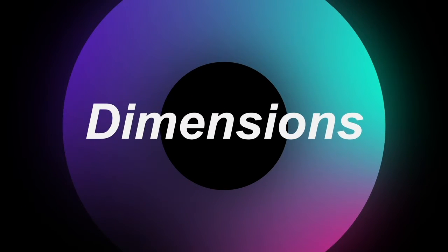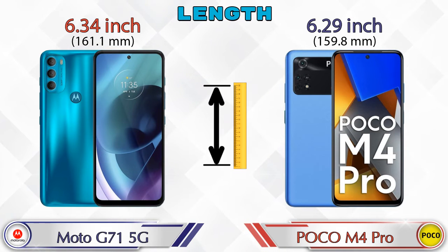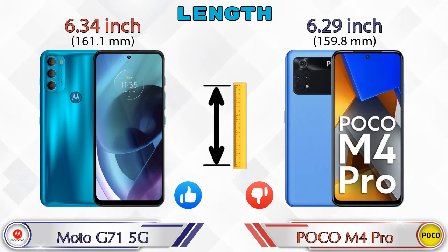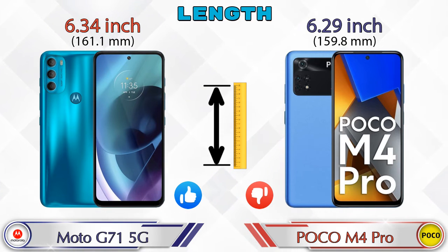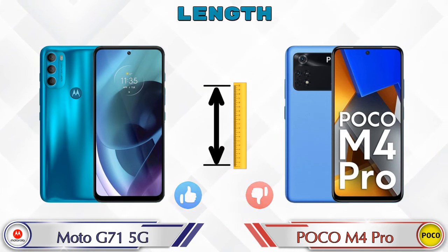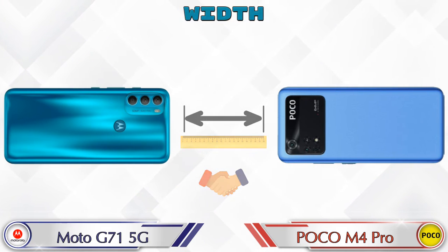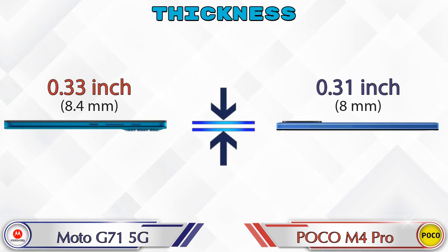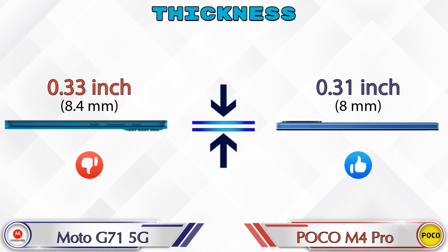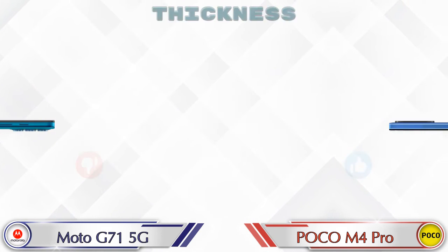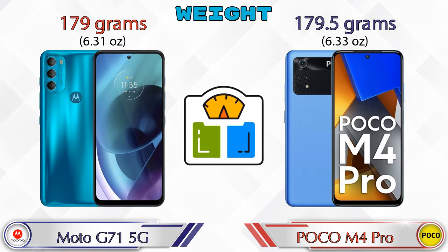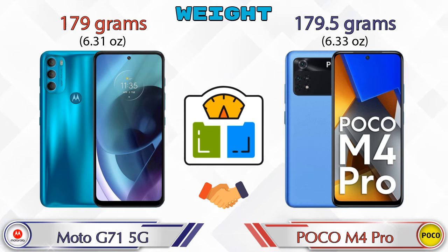Now let's check the dimensions. The length of the G71 5G is 6.34 inches and the Poco M4 Pro is 6.29 inches, which is less than the G71 5G. The width is the same in both phones at 2.91 inches. For thickness, the G71 5G is 0.33 inches and the Poco M4 Pro is 0.31 inches. For weight, the G71 5G is 179 grams and the Poco M4 Pro is 179.5 grams, which are almost similar.